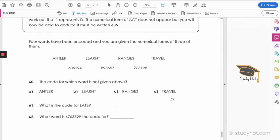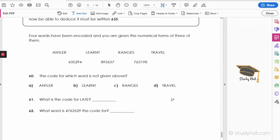Great, so now we've got our own examples. Four words have been encoded, and you're given the numerical forms of three of them. So, the code for which word is not given above, so we need to crack the code. So let's start looking for similarities. We can often look at them at the beginning or end of words.